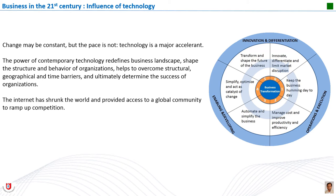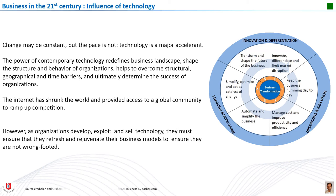The internet has shrunk the world and provided access to a global community, ramping up competition. Controlling the flow of information between departments using computer networks and the internet increases the efficiency of business operations. Information systems and technology also increase the effectiveness of management decision making. Managers use information systems to get information to help in their decision making — for example, when deciding whether to grant credit to a customer, a manager can use an information system to examine the customer's credit history. With relevant and readily available information from computer information systems, managers can make better decisions. Information systems provide the method and technology to support information needs and processes for every function in all types of businesses.